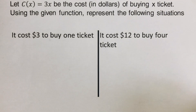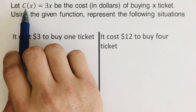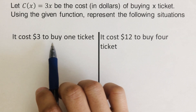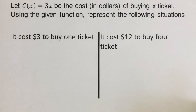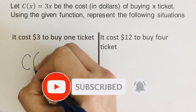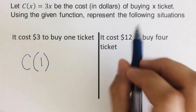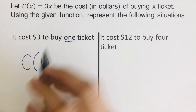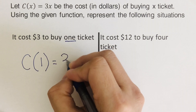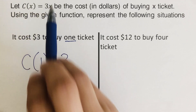Let c of x equal 3x be the cost in dollars of buying x tickets. Using the given function c of x equals 3x, we need to represent the following situation: it costs three dollars to buy one ticket. So I can write c of one, because the x represents the number of tickets — that's one here. So c of one is equal to three, which makes sense because if x is one, three times one is three.